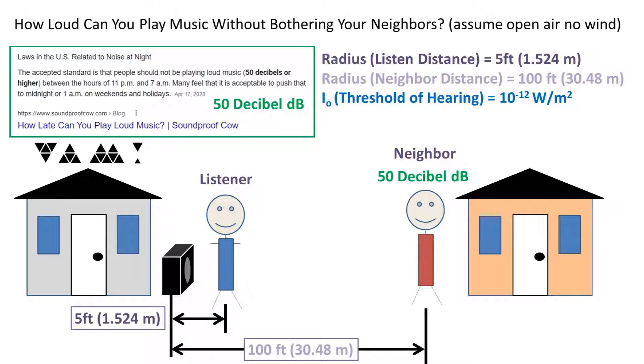According to this website, about 50 decibels is allowed after 11 p.m., which is about the sound level of traffic or quiet conversation. We will set this for the neighbor's threshold for calling the police at 50 decibels. So how do we go about solving this one?